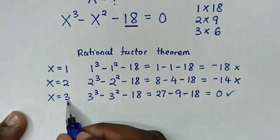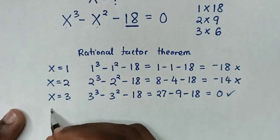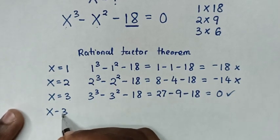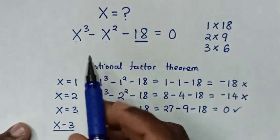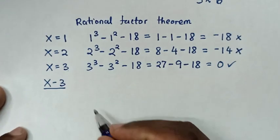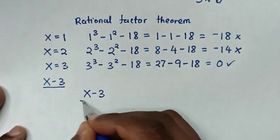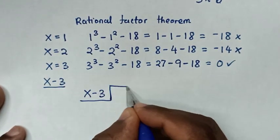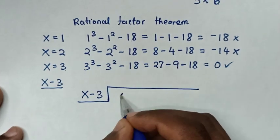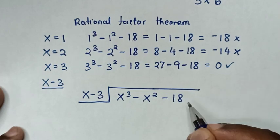Then from x is equal to 3, we take 3 to the left side, so it will be x minus 3. Now from here, x minus 3, we divide into the cubic equation using long division: x minus 3 into x³ minus x² minus 18.